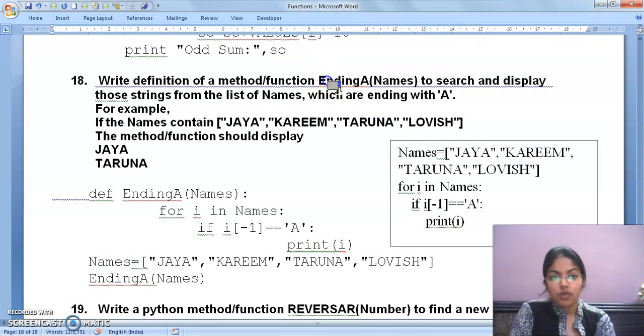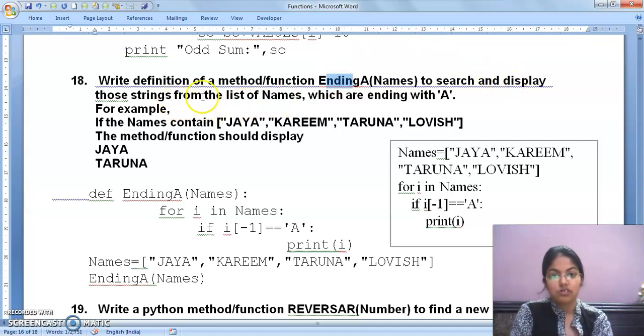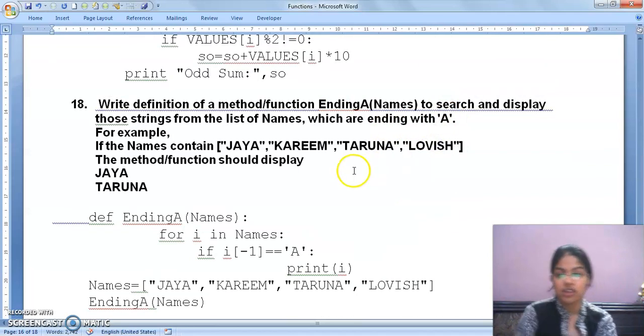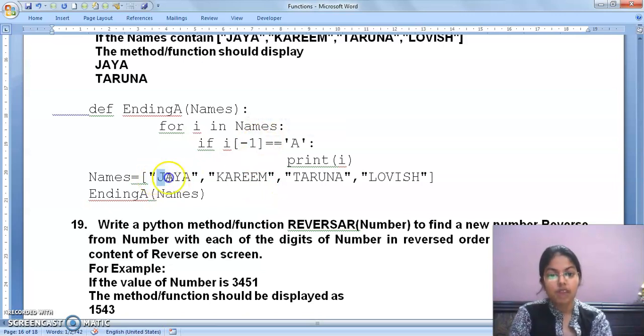This one. Keep ending with A, to search and display those strings from the list of names which are ending with A. You see, those ending with A will have index minus one. So you have these names given. One by one you will loop through names. So if i of minus one, means first name check. If its index minus one has A, I have to print it. Got it? Then pick next name, Karim. Does its minus one index have A? No. So condition will get false. So this will not get executed. Next name will print. Then check next, Taruna. Then this will print. Got it?